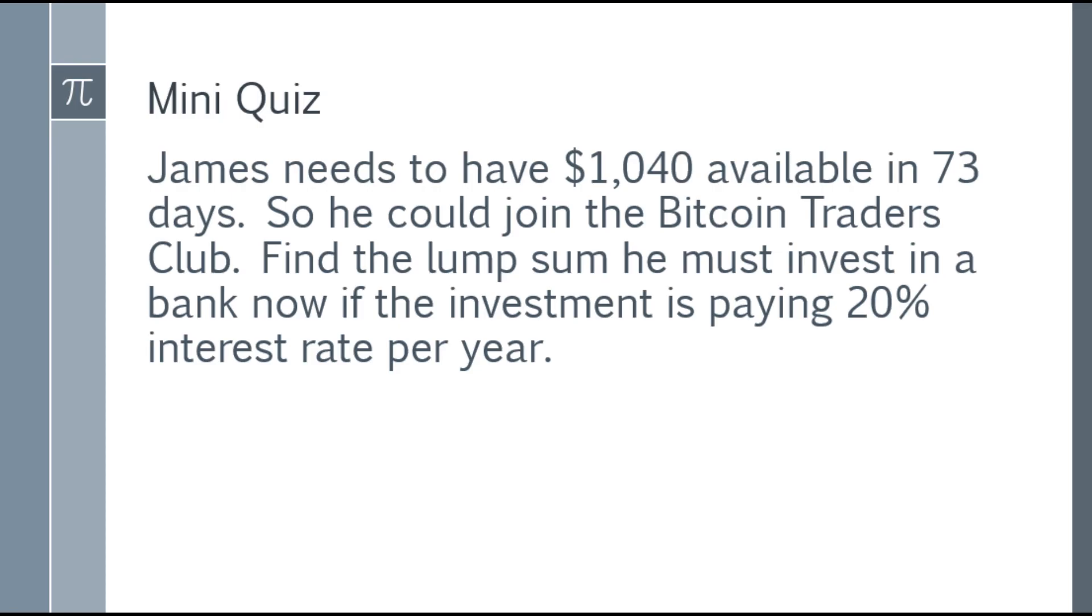Okay, so mini quiz. James needs to have $1,040 available in 73 days so he could join the Bitcoin Traders Club. Find the lump sum he must invest in a bank now if the investment is paying 20% interest rate per year. So James needs $1,040 in 73 days. There's an investment with 20% interest rate per year. So how much does he need to invest now so that after 73 days he can get $1,040? So I'll give you 5 to 10 seconds. You may want to pause the video and I will give you the answer as well as the solutions after this.